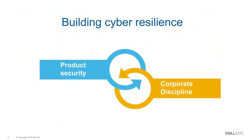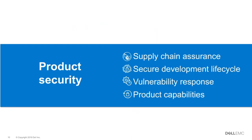Building cybersecurity requires more than just a product-level approach — it also requires this corporate discipline-level approach. On the product security side, it all starts with our supply chain assurance — the components that go into a VxRail — and how do we make sure that the components getting into the product, and the people touching the product, are the right people at every point throughout the supply chain.